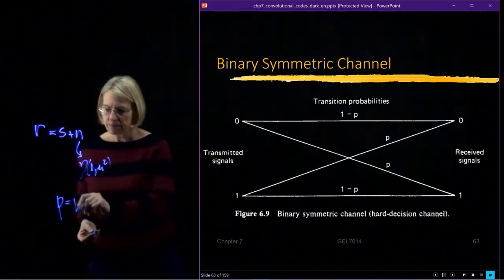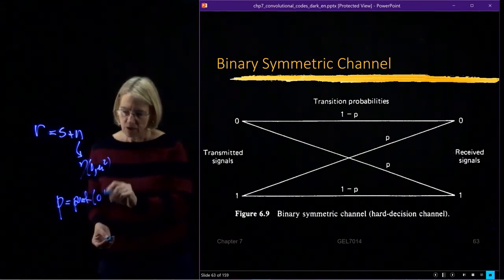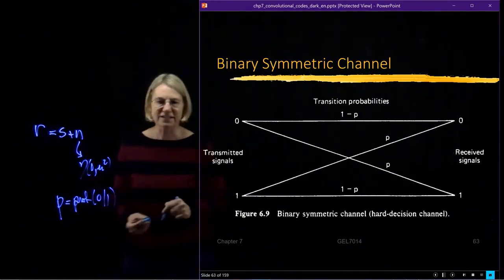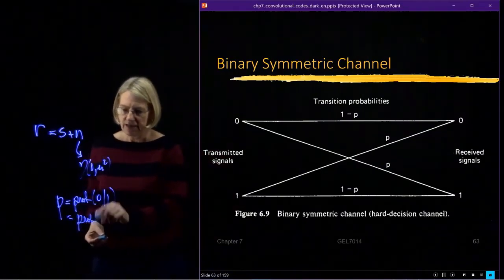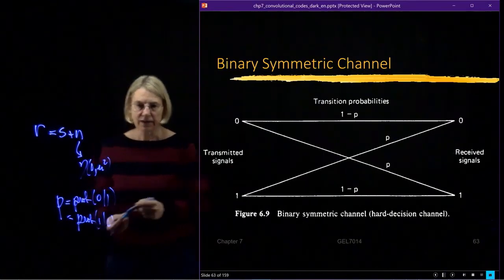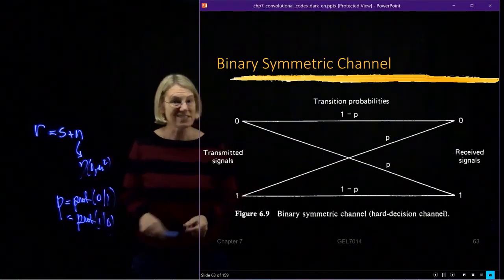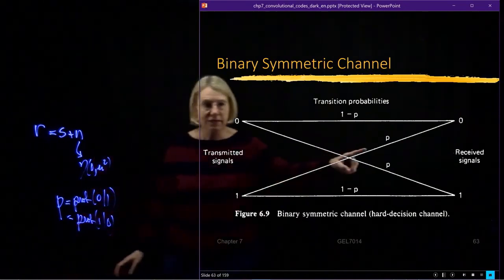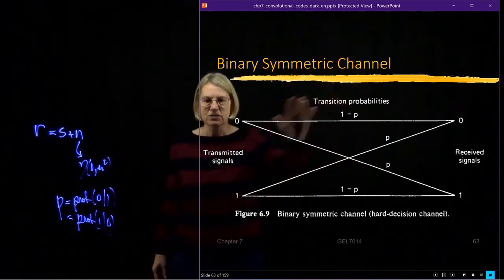So 1 was sent, but I think it's a 0. And I'll assume that this is equal to the same probability that, you know, a 1 was, I pick a 1 even though it's 0. So two types of errors, assume the two types of errors have the same probability, which I call P. So this would be what we call a binary symmetric channel.